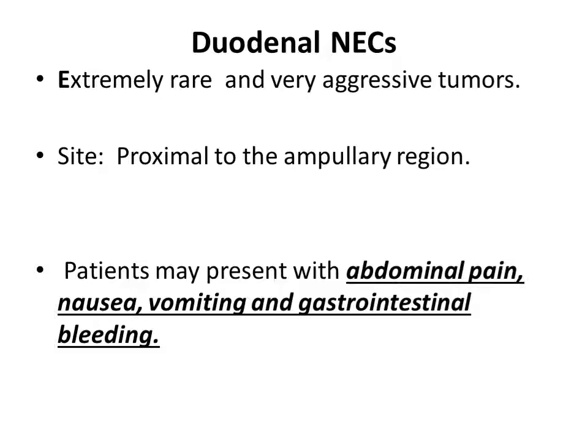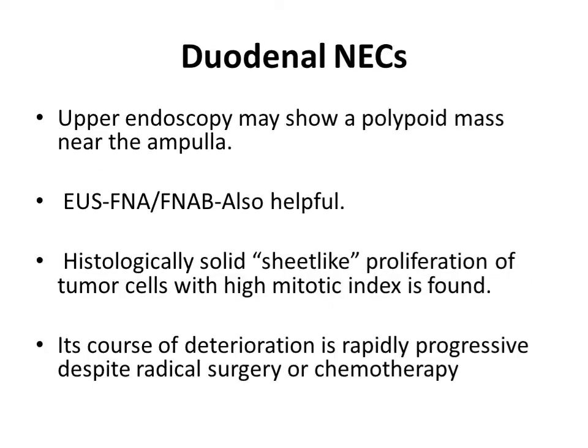Duodenal neuroendocrine carcinoma is an extremely rare and very aggressive tumor, present proximal to the ampullary region. Patients may present with abdominal pain, nausea, vomiting, and gastrointestinal bleeding.